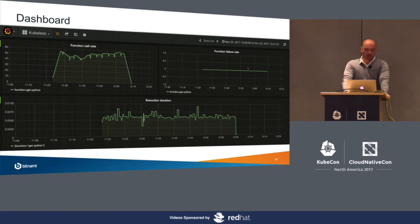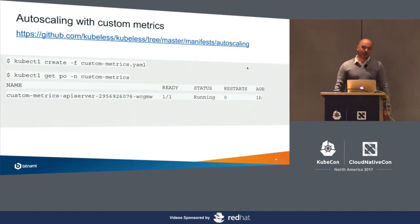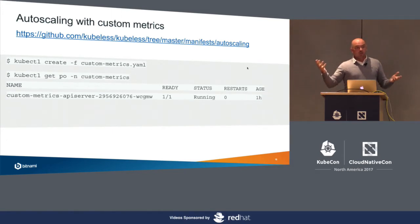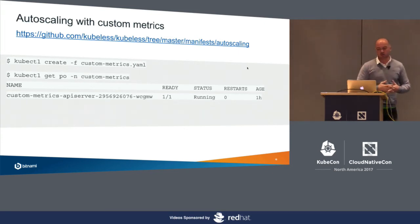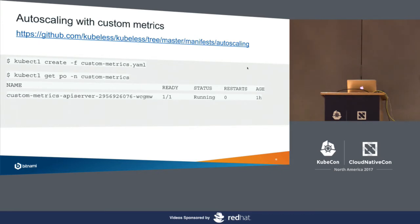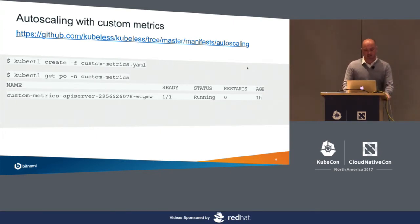Once we do this instrumentation, Prometheus scrapes all those metrics and we build dashboards — function call rate, failures, duration of execution. But the real reason for instrumenting the runtime is to enable auto-scaling, because that's key for serverless. Kubernetes has auto-scaling built in. By default it auto-scales based on CPU, but you can do auto-scaling based on custom metrics. Since we've instrumented our runtime, our controller can create an HPA automatically using requests per second to scale based on QPS.